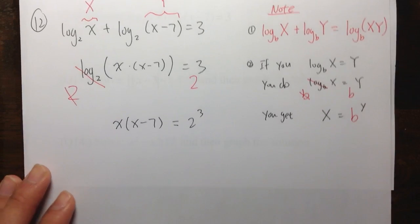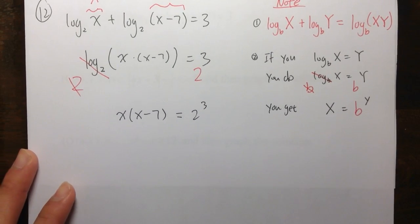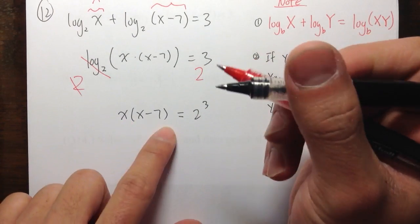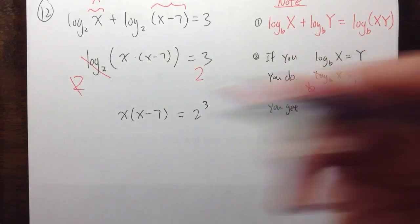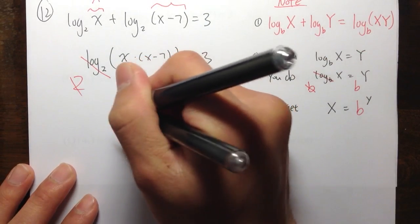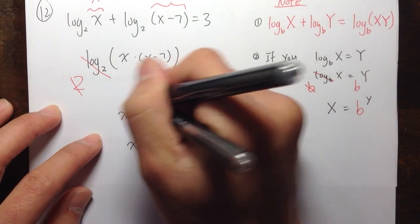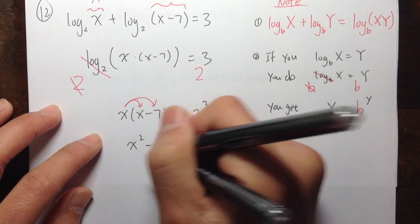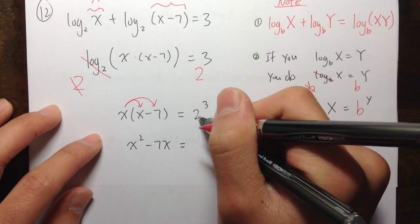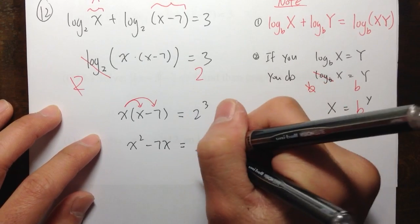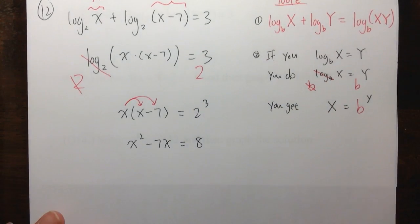And then no more logs. We can just do the usual business. Whenever you see a parentheses and an X in the front, always try to distribute and see what happens. X times X is X squared. And then do X times negative 7. We get minus 7X. That's equal to 2 to the 3, which is 8.